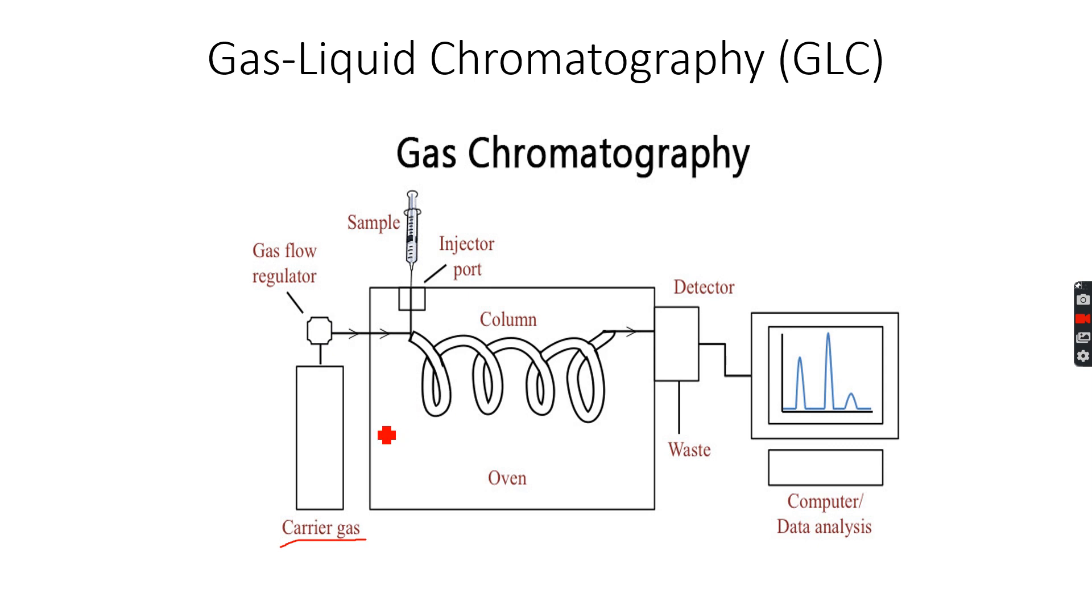The stationary phase is a very polar, non-volatile liquid. The carrier gas, mentioned in the next slide, an example is H2 because the carrier gas should be very inert and very non-polar.